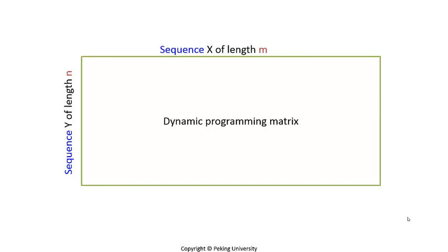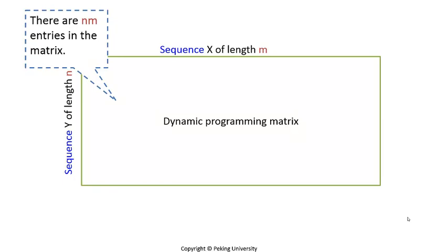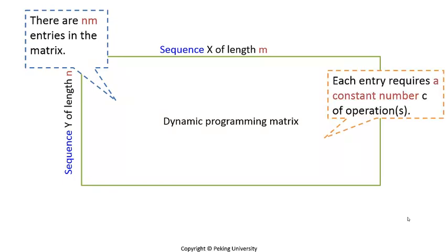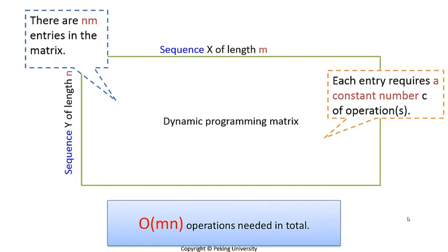For two sequences of length M and N respectively, we need to fill in M times N cells. Each filling takes a constant time C. The total time needed will thus be directly proportional to M times N, and the time complexity is O(MN). We can see that Needleman-Wunsch algorithm reduces the time cost from exponential time to square time. The time complexity is reduced significantly.